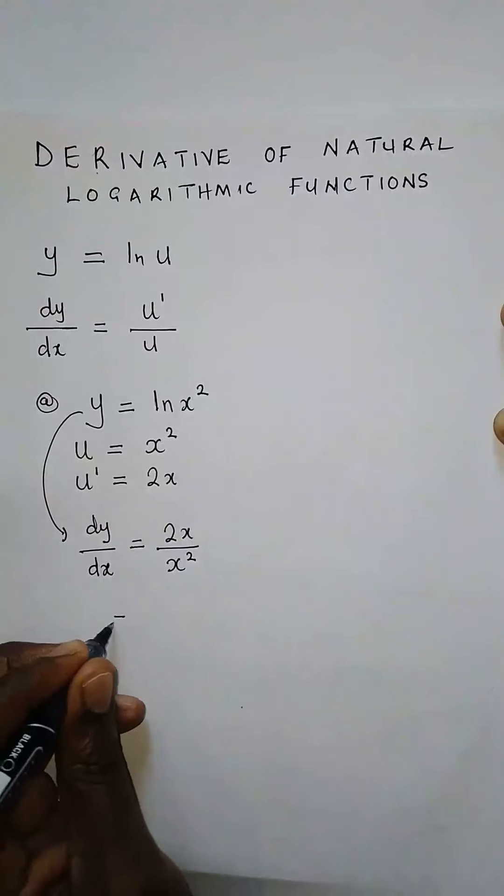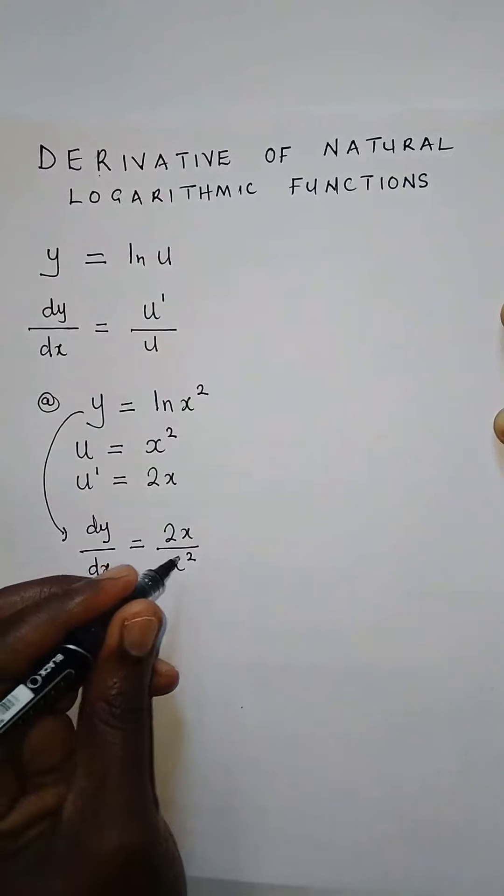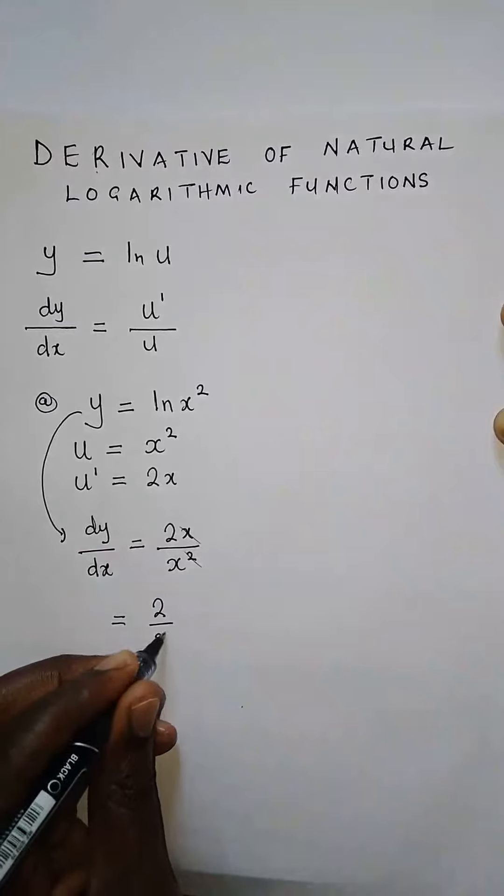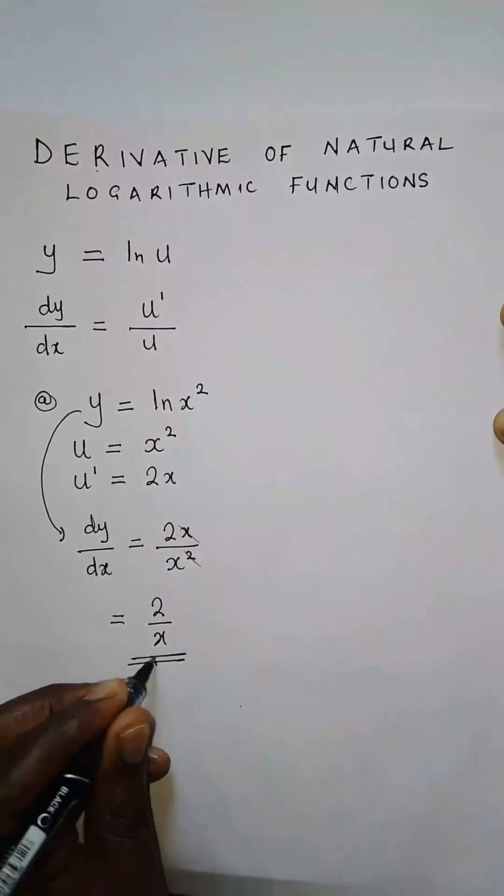We simplify this. We can cancel one x down, and that x, so we just remain with 2 over x.